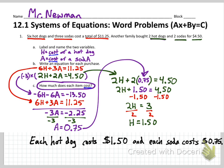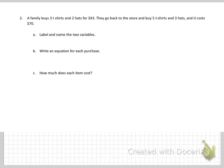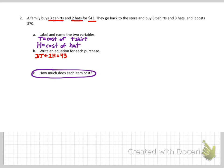Let's try the next problem. A family buys three t-shirts and two hats for $43. They go back to the store and buy five t-shirts and three hats and it costs $70. So how much does each item cost? Well, that's going to indicate our variables, which are going to be t-shirts and hats. T is the cost of the t-shirt. H is the cost of each hat. Let's write an equation. The family bought three t-shirts and two hats for $43. So 3T plus 2H equals 43. Then five t-shirts and three hats for $70, so 3T plus 3H equals 70.